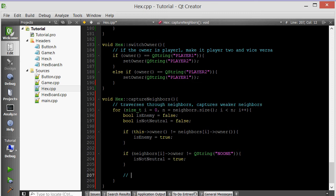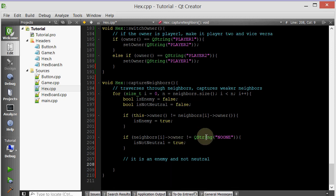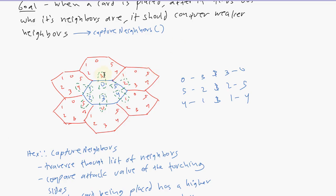Assuming it is an enemy and not neutral, now we have to find out which neighbor we're talking about. The 0th neighbor corresponds to side 0, the 5th neighbor to side 5, etc. Because if it's the 0th neighbor, we want to compare the 0th side of this hex with the 3rd side of the neighbor. If it's the 1st neighbor, we want to compare side 1 of the hex to side 4 of the neighbor, and so on. So let's go ahead and do that.